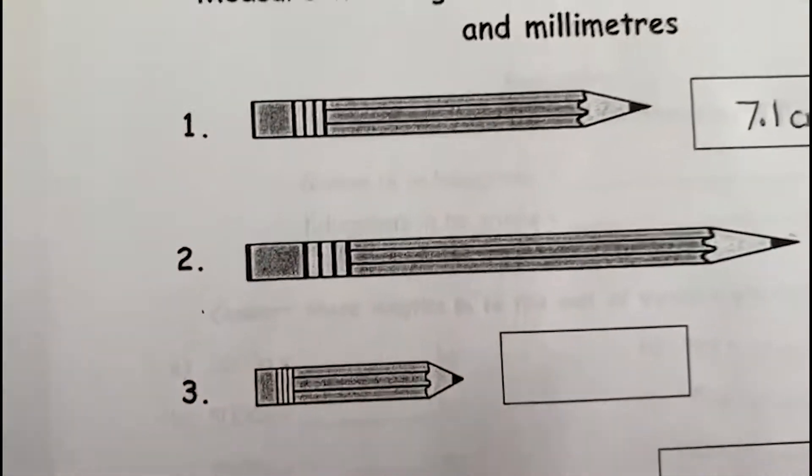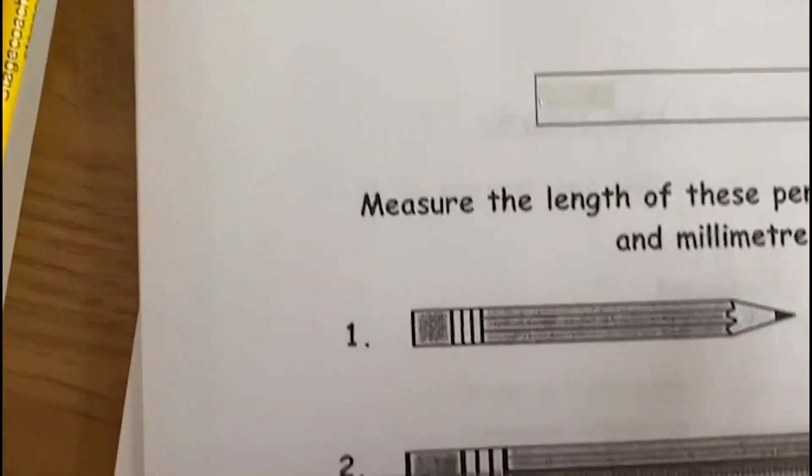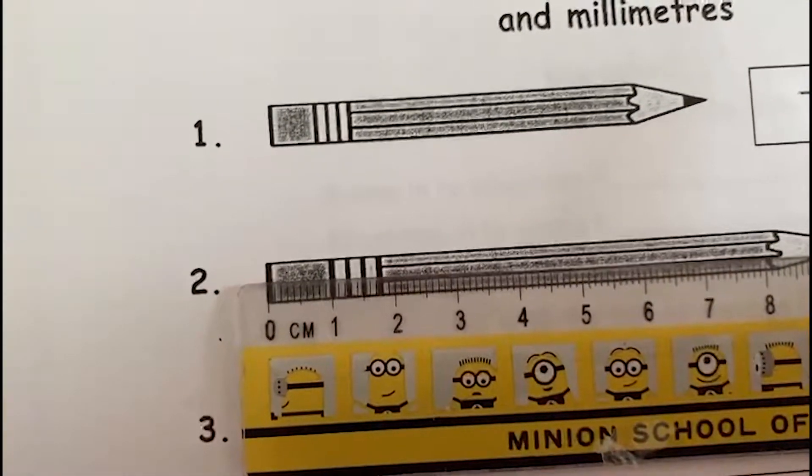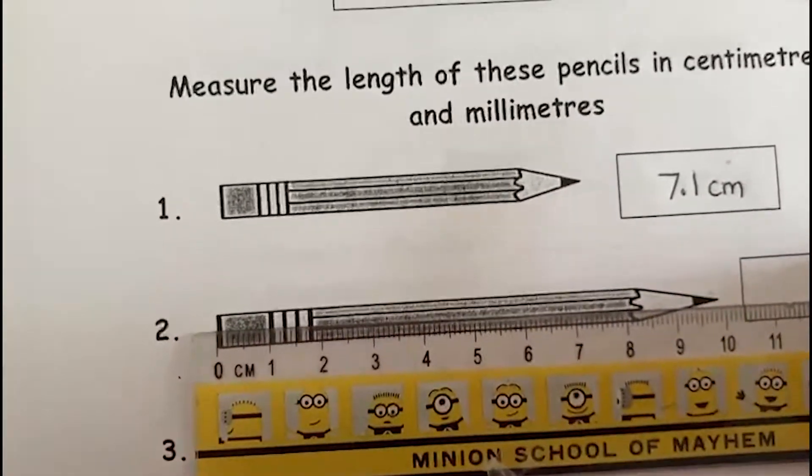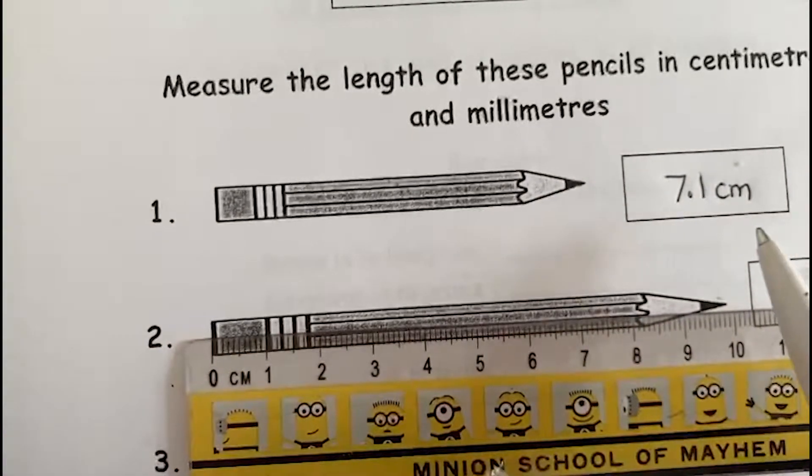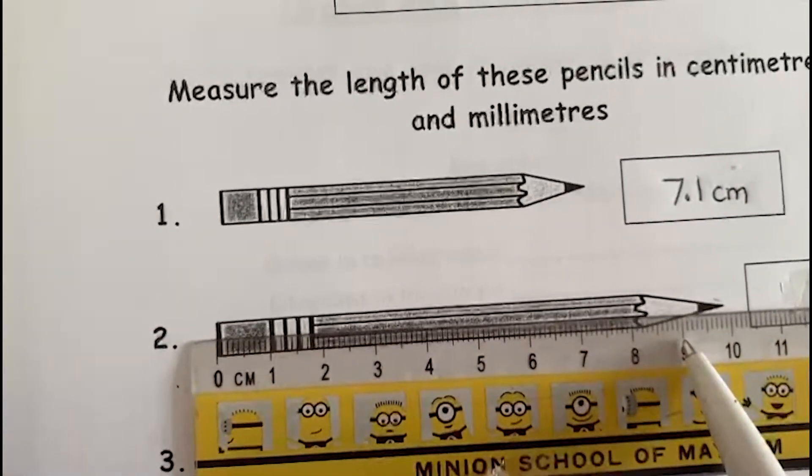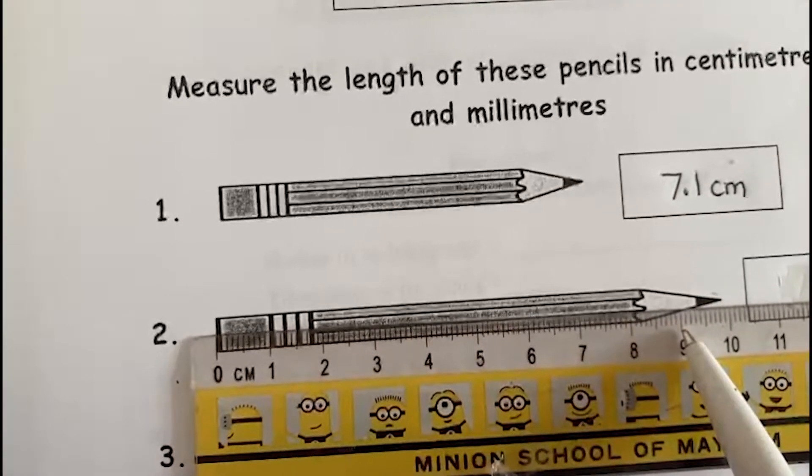Let's do another one. This is question two. And again, I find my ruler. I start from the zero. I go and start reading. And now I can see here it passes a nine. So it's nine something.